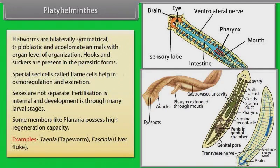Examples: Taenia, that is tapeworm; Fasciola, that is liver fluke.